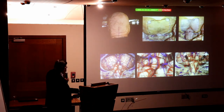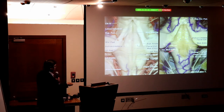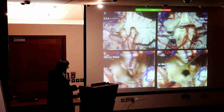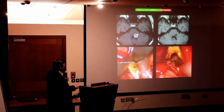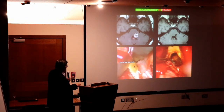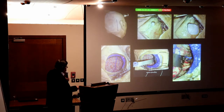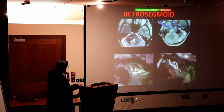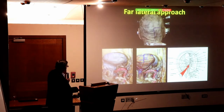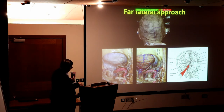Occipital approaches give access to the floor of the fourth ventricle. The telovelar approach allows you to look into the aqueduct and reach lesions in the tectal plate or tegmentum of the midbrain. Surface lesions are easy — you see the discoloration, open over it, and you are done. The far lateral approach is rarely used and very laborious.